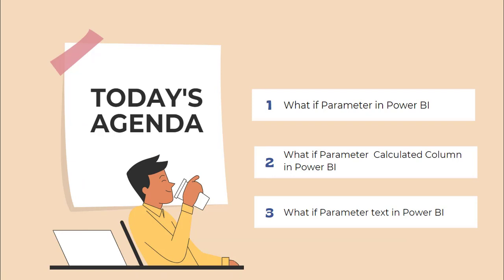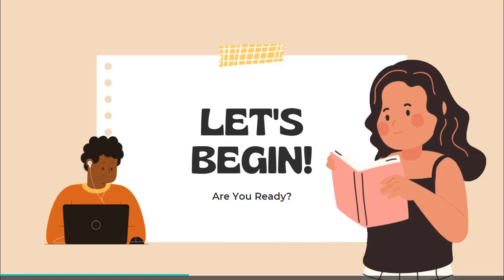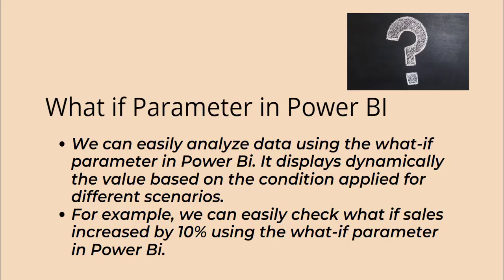These are the headings we are going to cover in this video. First, we will see what is the What-If parameter in Power BI, and we will also learn whether it is possible to display the What-If parameter using a calculated column in Power BI or not. In the same way, we will learn whether we can use text values through the What-If parameter or not. So, let's begin.